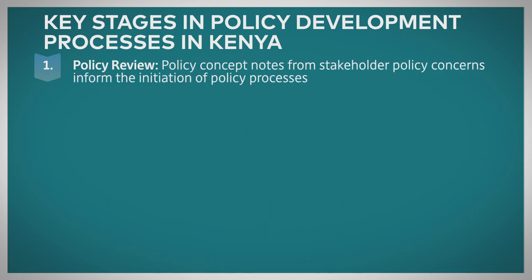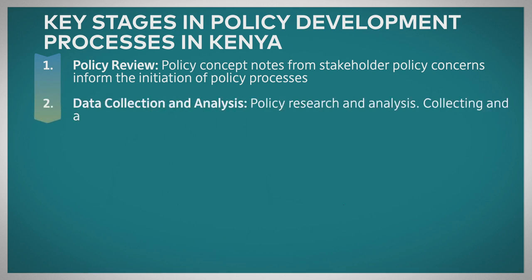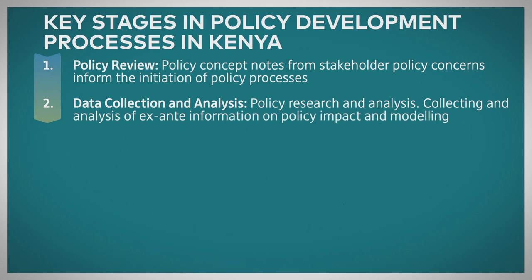Nous allons voir les étapes clés des processus d'élaboration de politiques. La première étape clé est l'examen politique, c'est-à-dire l'examen des problèmes. Il y a sûrement des problèmes comme nous l'avons déjà mentionné — c'est la première étape. L'étape suivante est l'analyse de ces problèmes, ce qu'on appelle l'analyse des problèmes en termes de contexte politique. Vous procédez à une modélisation et les étudiez en détail pour voir s'ils sont suffisamment bons pour faire une politique.